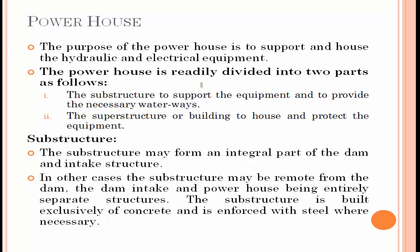Next is the powerhouse, a major component of the hydro power plant. The powerhouse has two different categories: the substructure and the superstructure. The powerhouse is used to support and house the hydraulic and electrical equipment. The substructure may form an integral part of the dam and intake structure, or in other cases the substructure may be separate, with the dam intake and powerhouse being entirely separate structures.